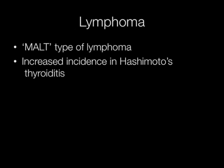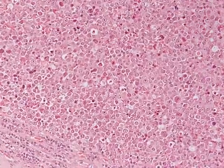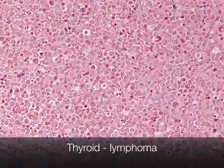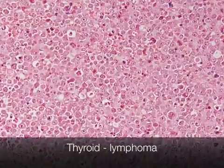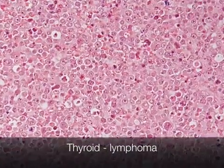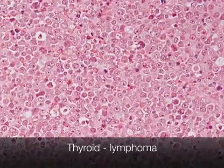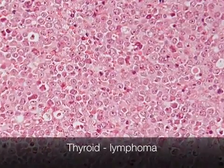Lymphoma of the thyroid is a MALT type of lymphoma. MALT stands for mucosa-associated lymphoid tissue. There is an increased incidence of lymphoma in patients with Hashimoto's thyroiditis. This is the histological appearance of a thyroid lymphoma, composed of monomorphic, atypical lymphoid cells.